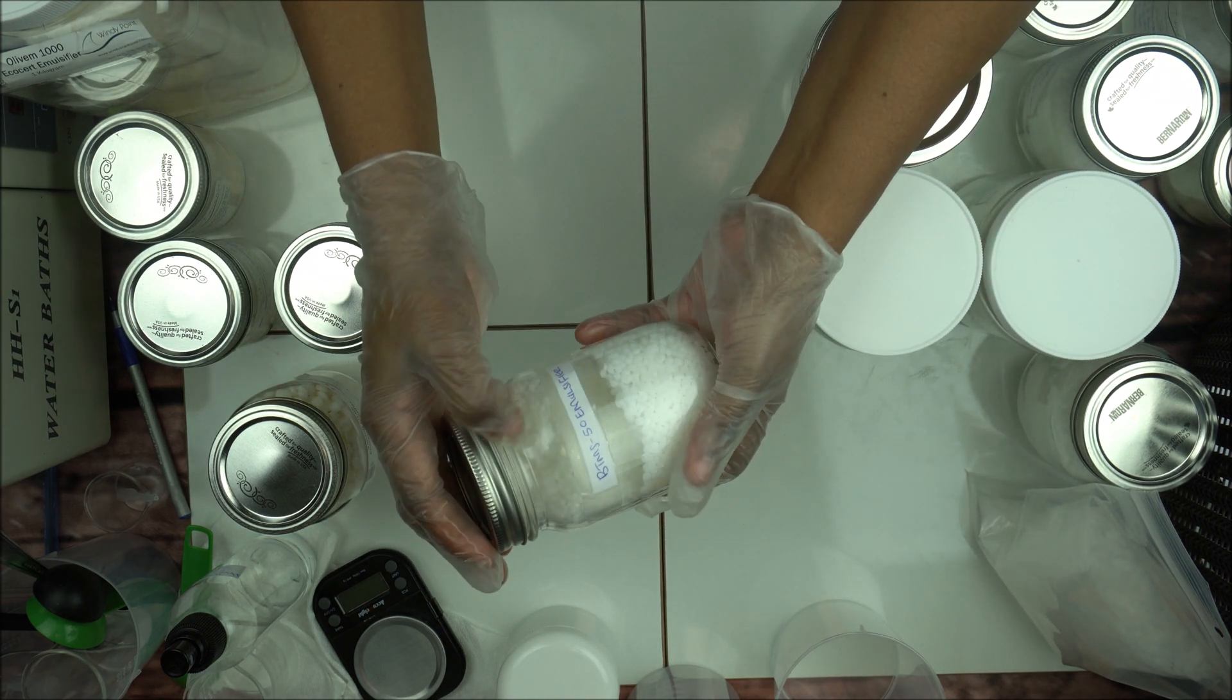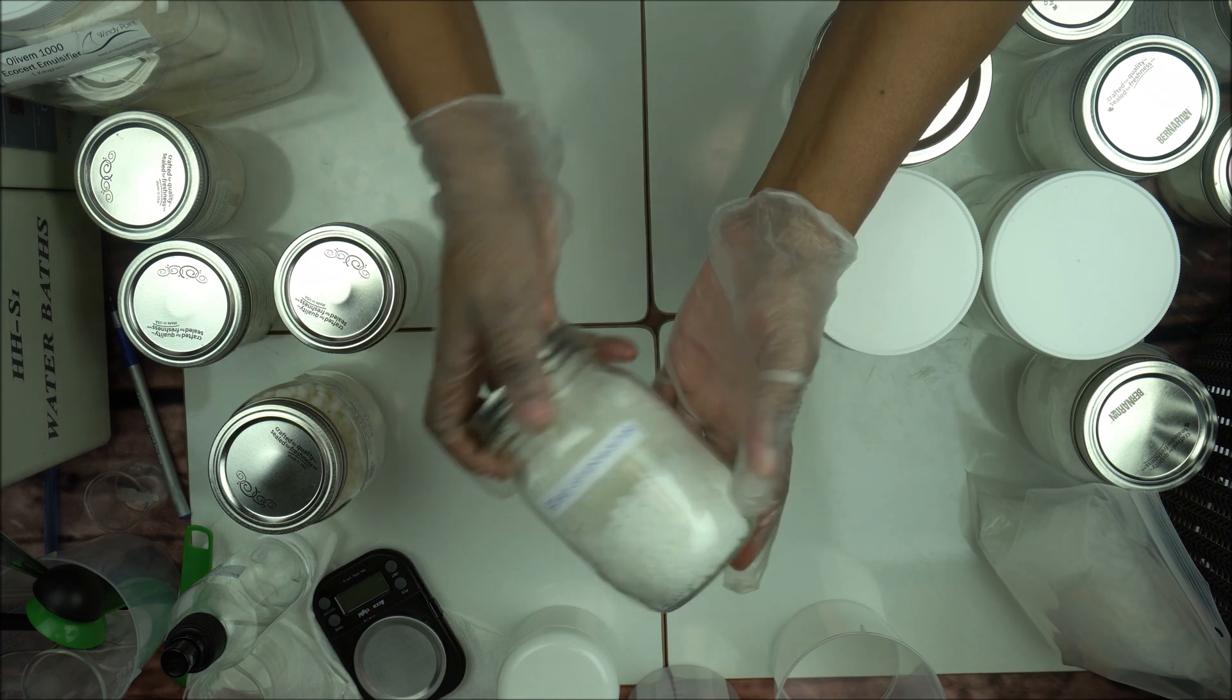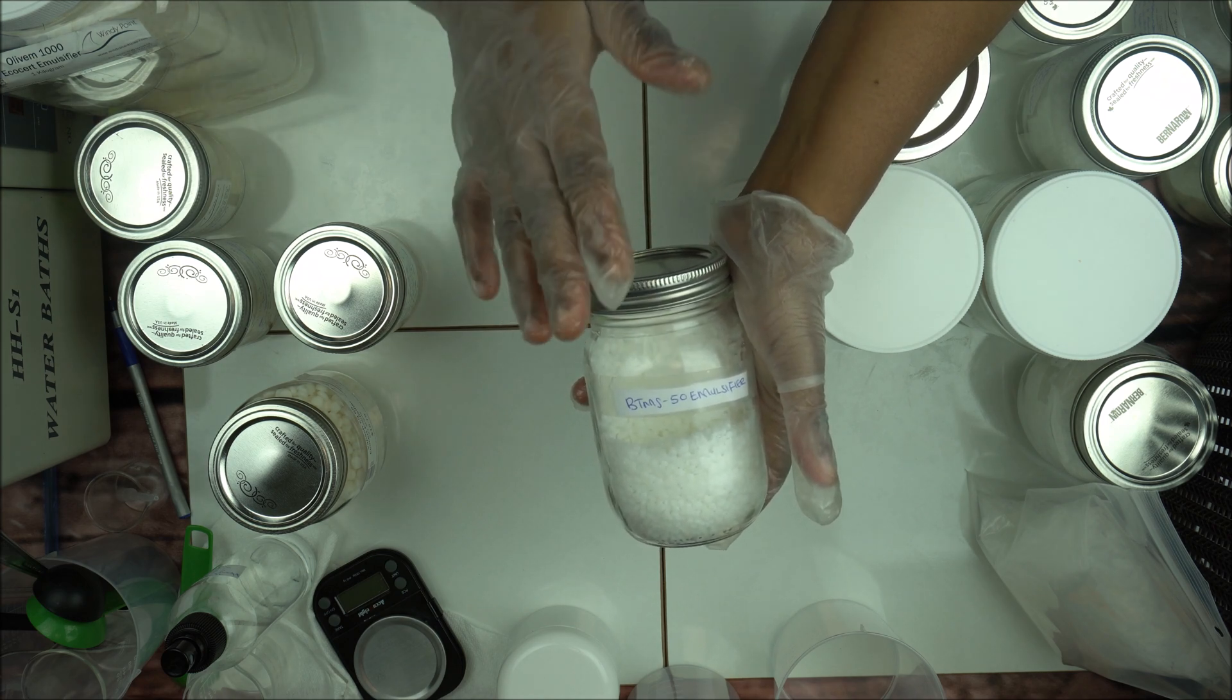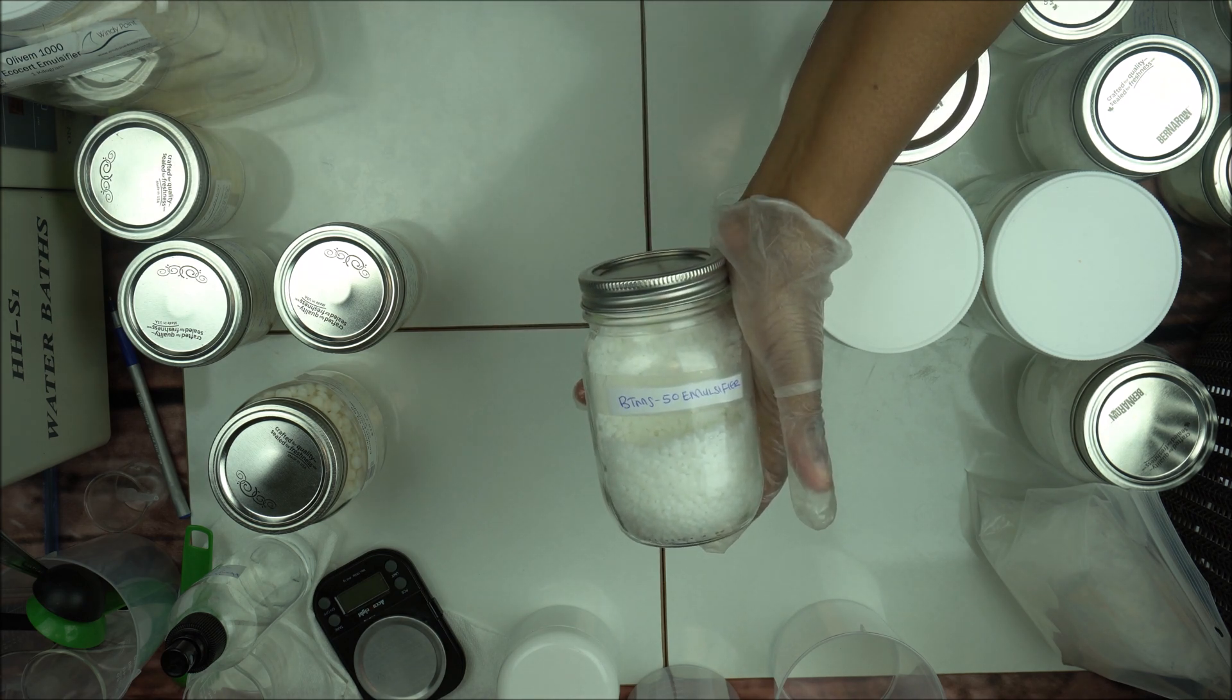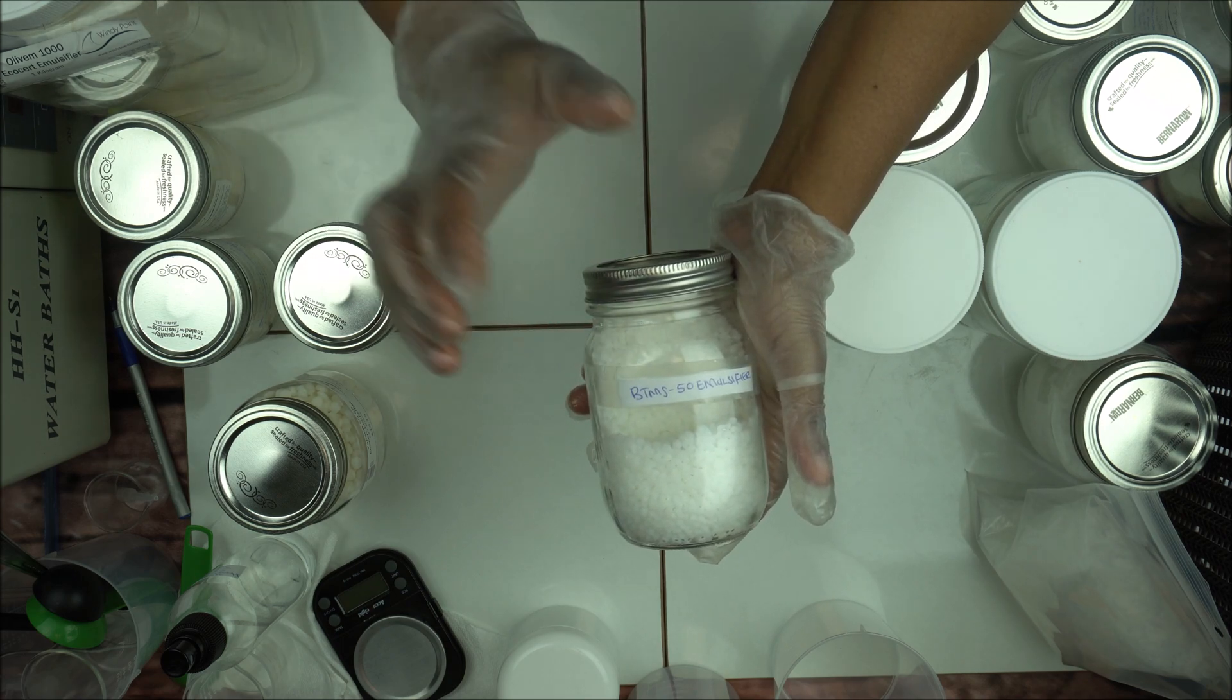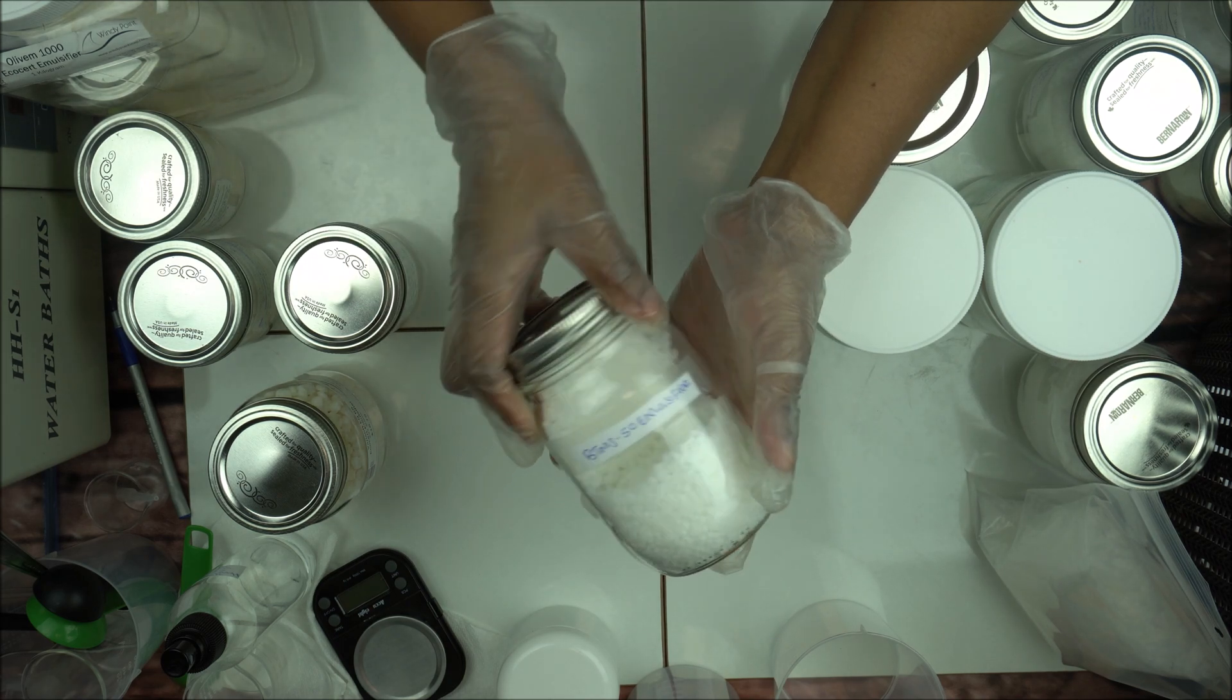Going to BTMS-50, this emulsifier you can use a little bit to make lotion, but it's best for hair products. It gives a good conditioning property to shampoo, so it's a good emulsifier that is really, really scarce in the market right now.